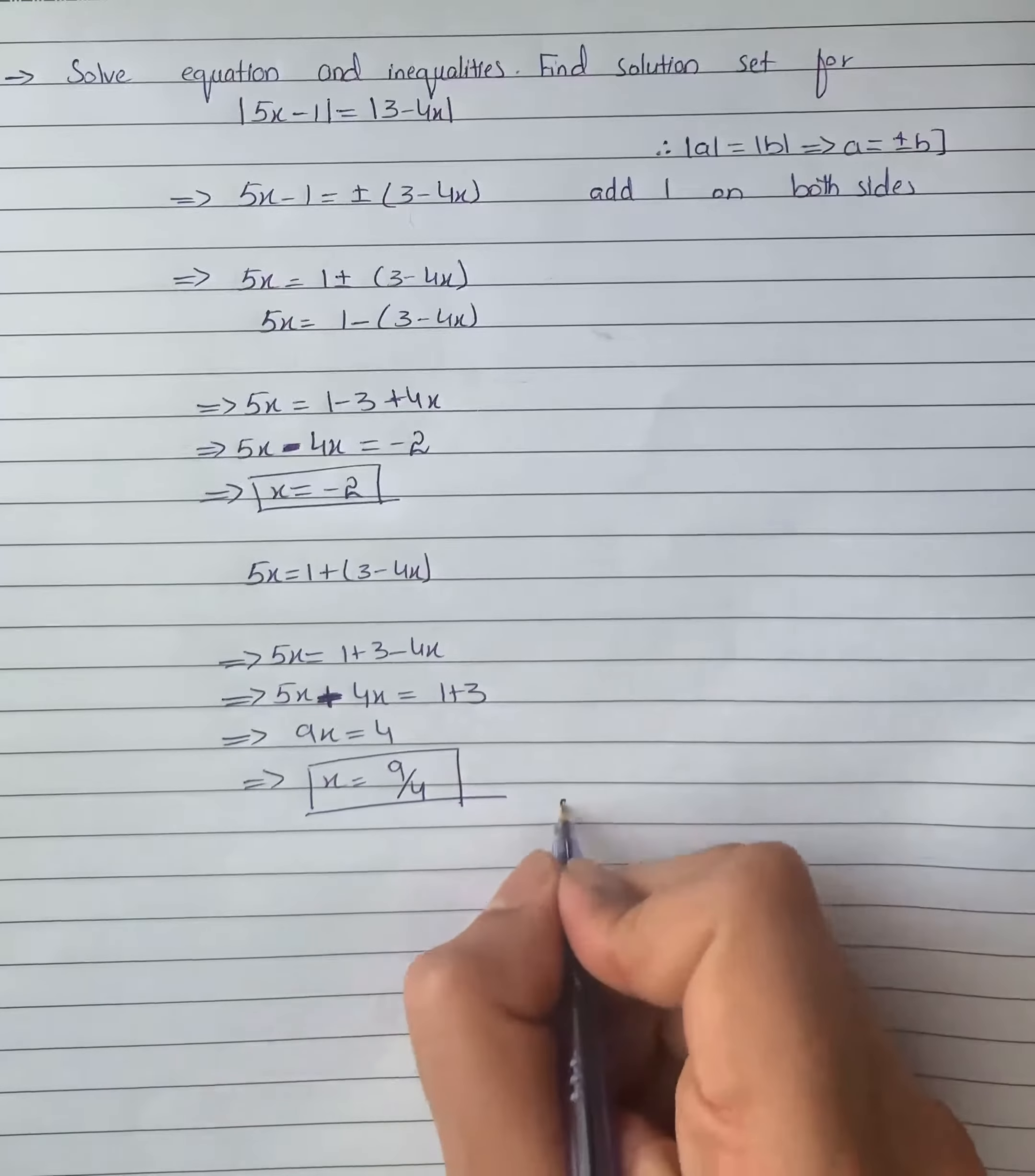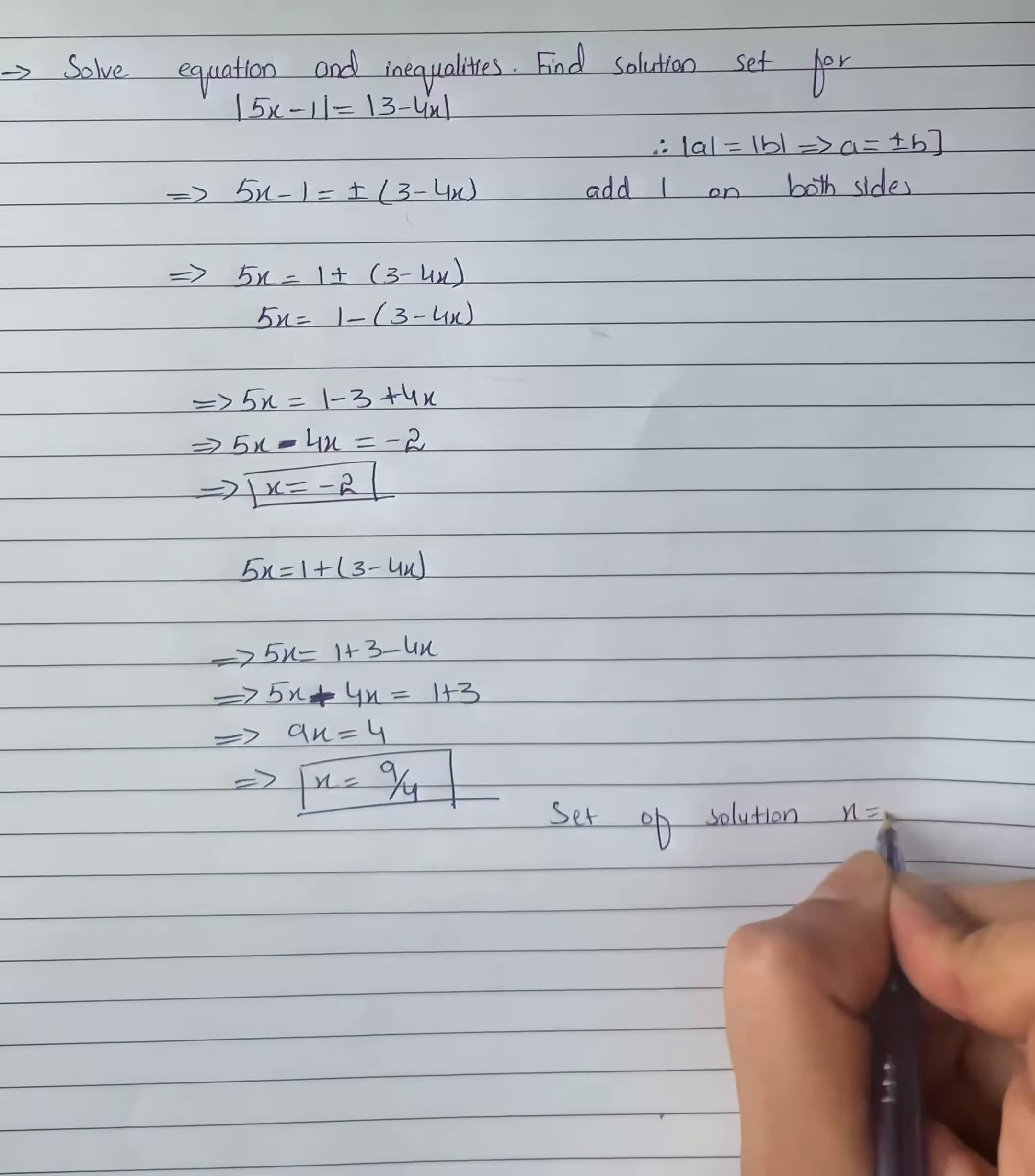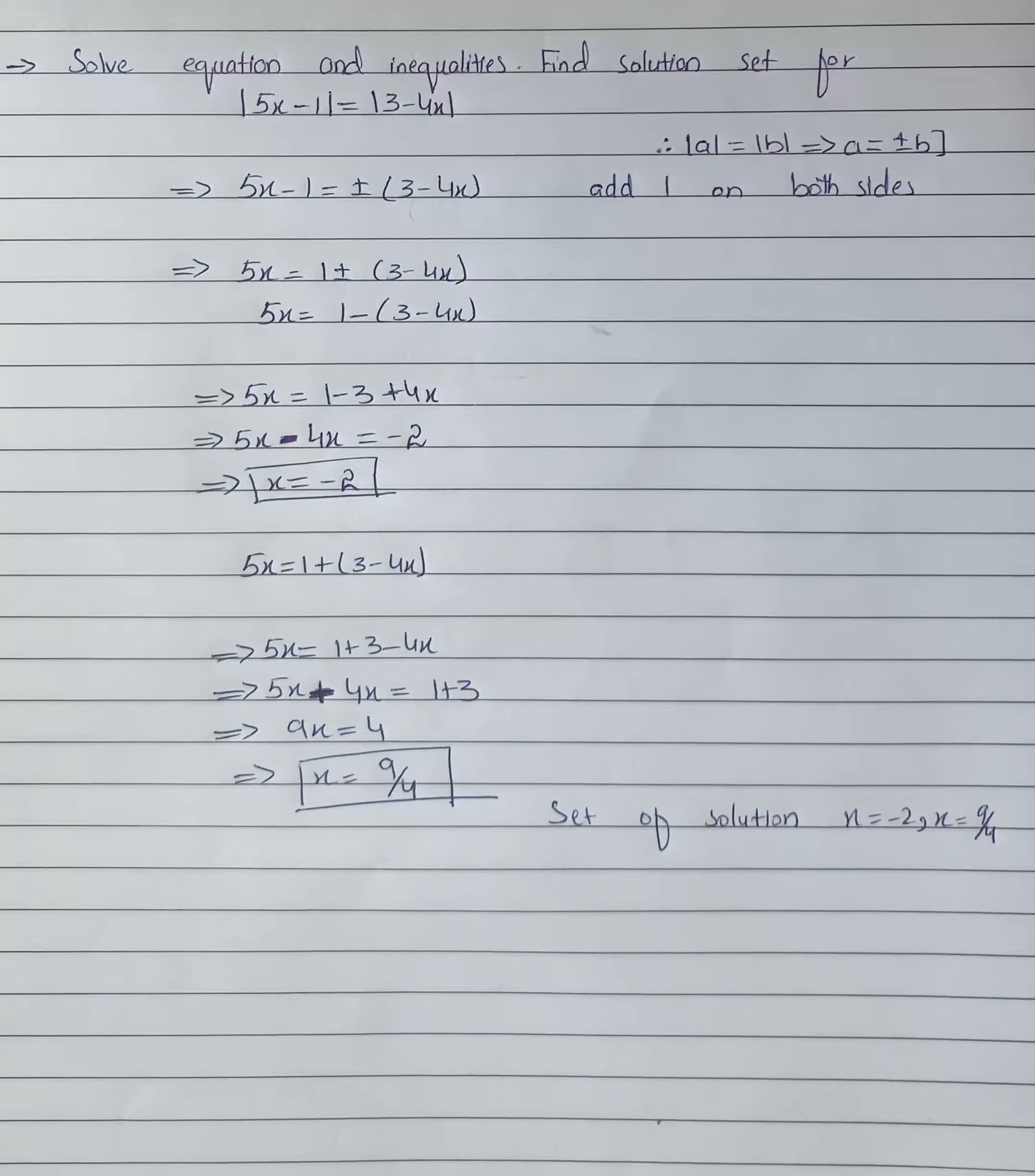So the set of solutions available is either x = -2 or x = 4/9. That's how we're going to solve it out.